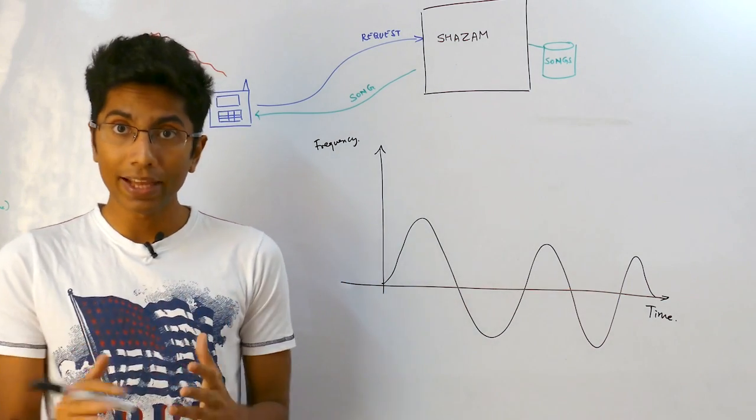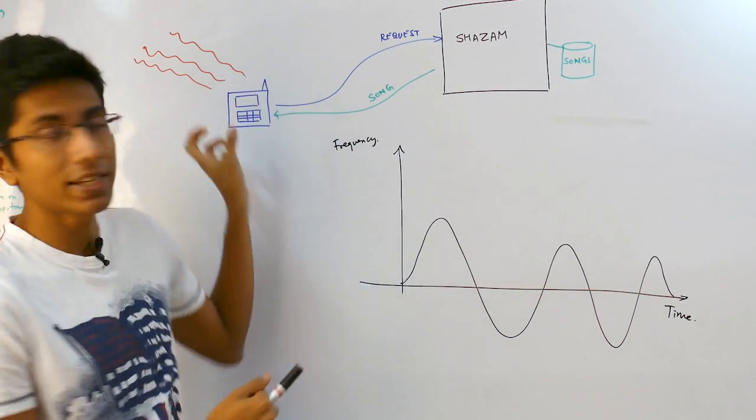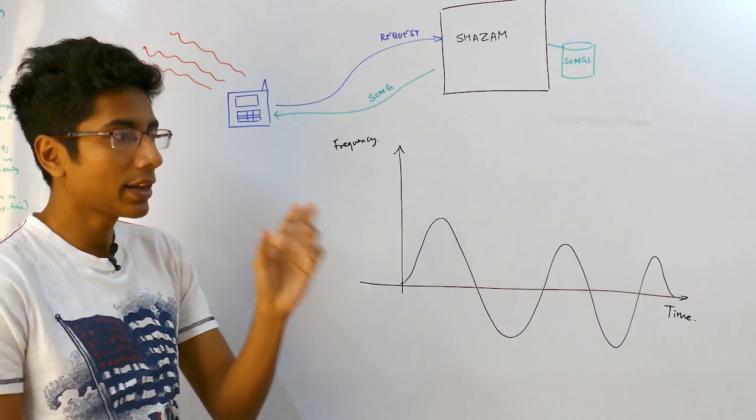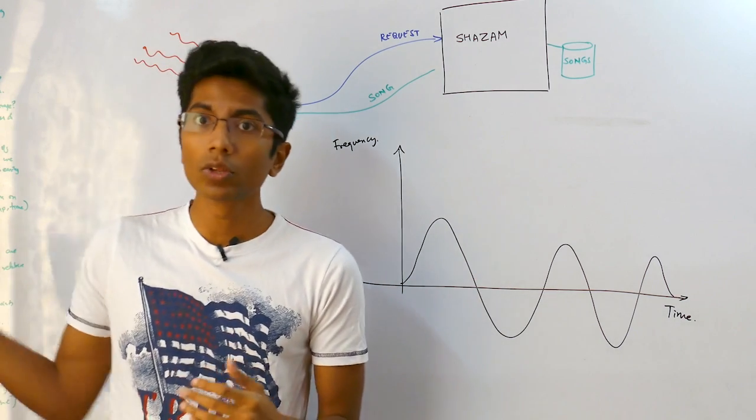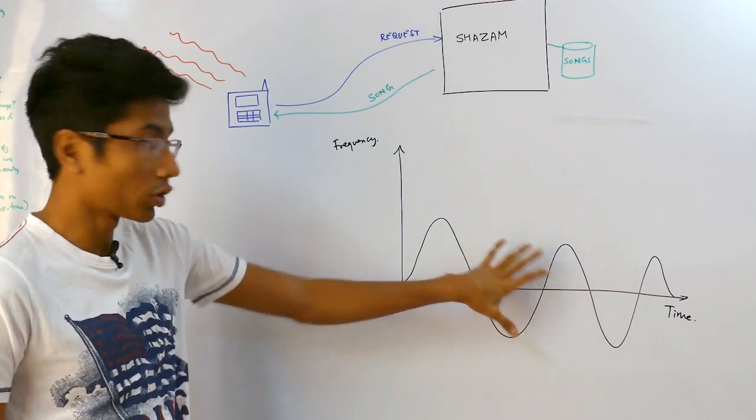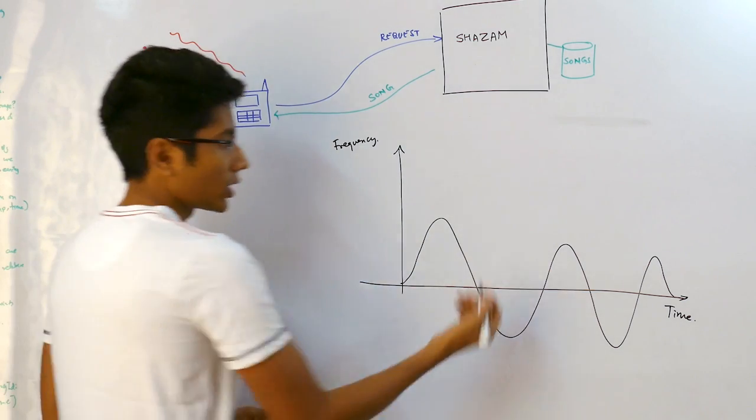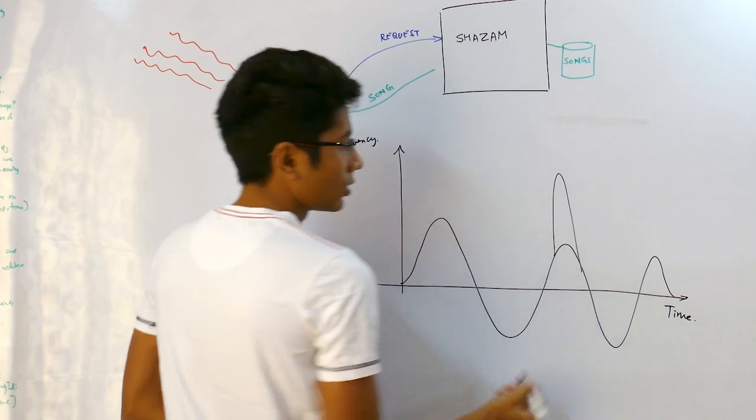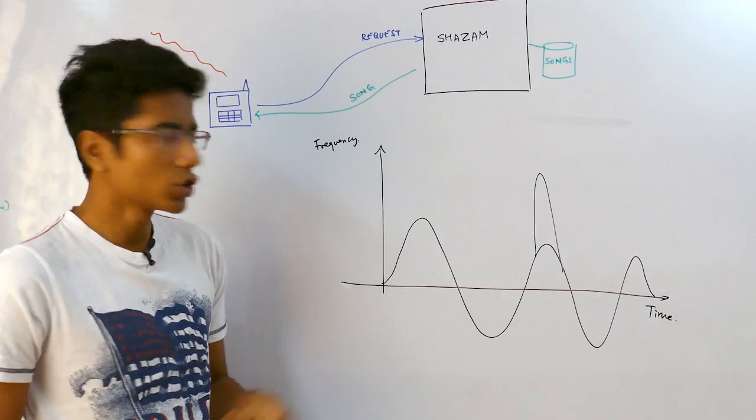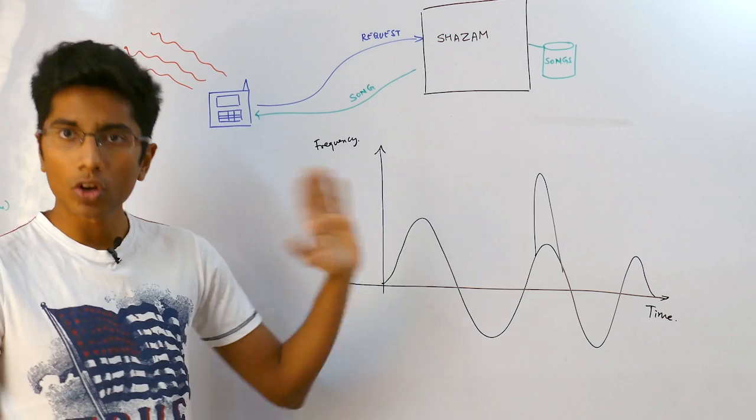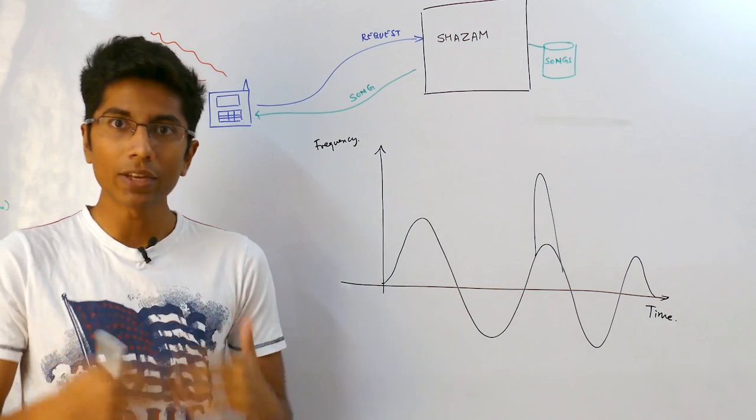The problem is for an app like Shazam these clippings are taken in noisy environments or in environments where there is something else spoken. Like if there's a person next to you they'll be speaking. So this frequency graph, the original one will be changed in the clipping maybe by something like a loud sound of a glass breaking or something. Just one parameter is not good enough to define the song for us. We need something more robust.